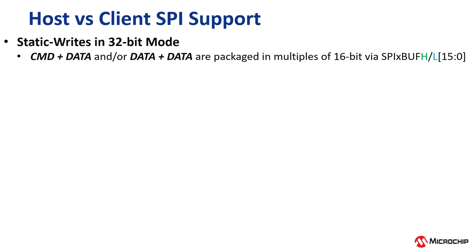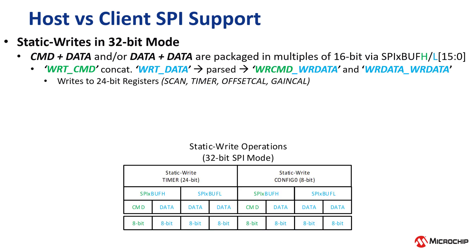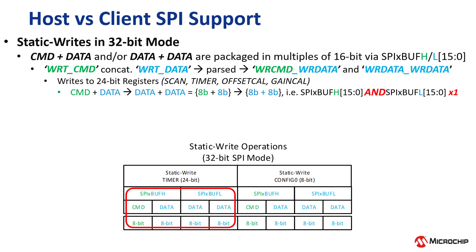Similar to 16-bit SPI mode, the 8-bit write command is concatenated with the 32-bit write data value and parsed into two 16-bit words: write command/write data and write data/write data. For static write operations to 24-bit registers, the write command/write data value is transmitted via SPI-Buff H[15:0] and the write data/write data value via SPI-Buff L[15:0], together comprising the 8-bit write command and the upper, high, and low data bytes needed for the 24-bit static write operation.